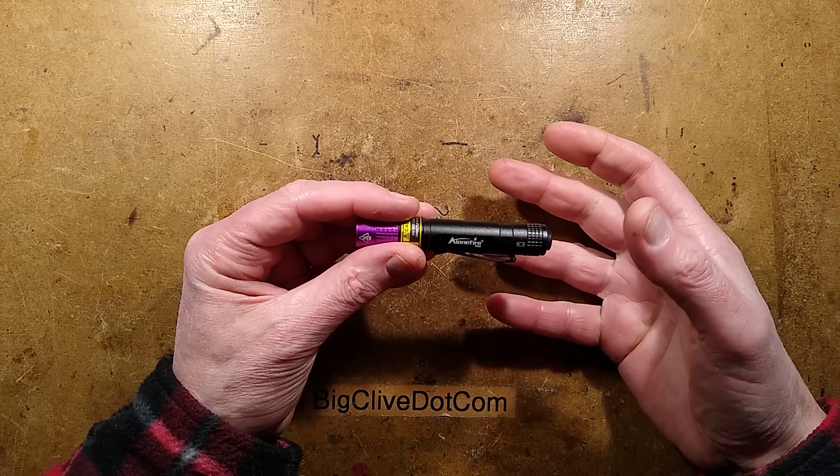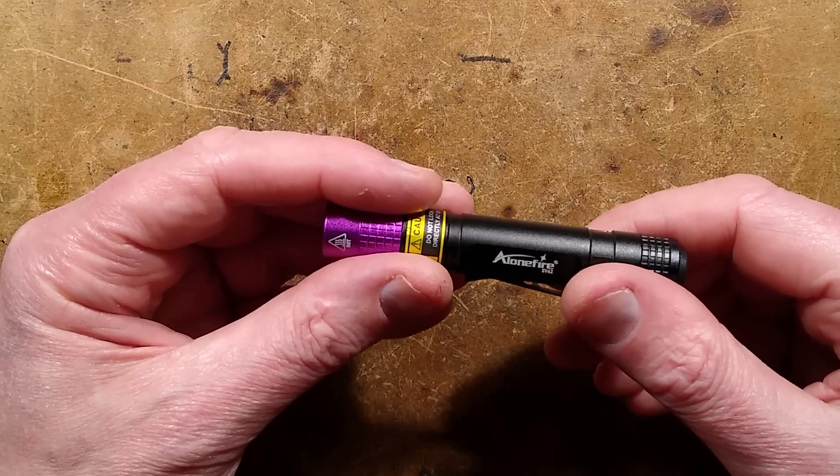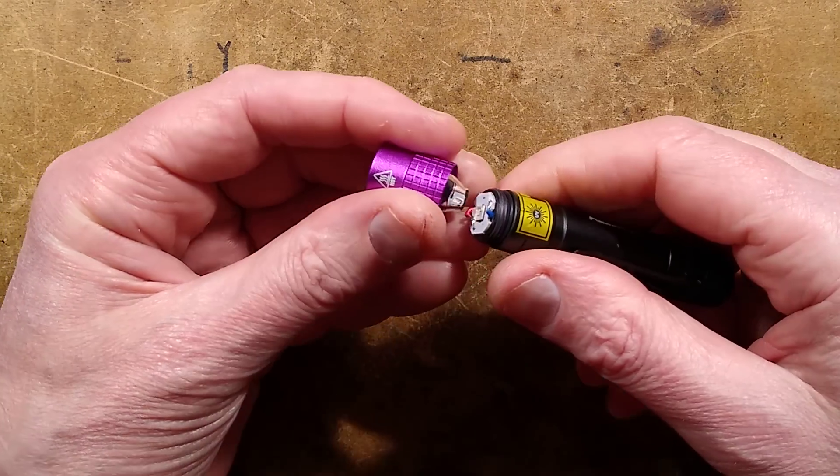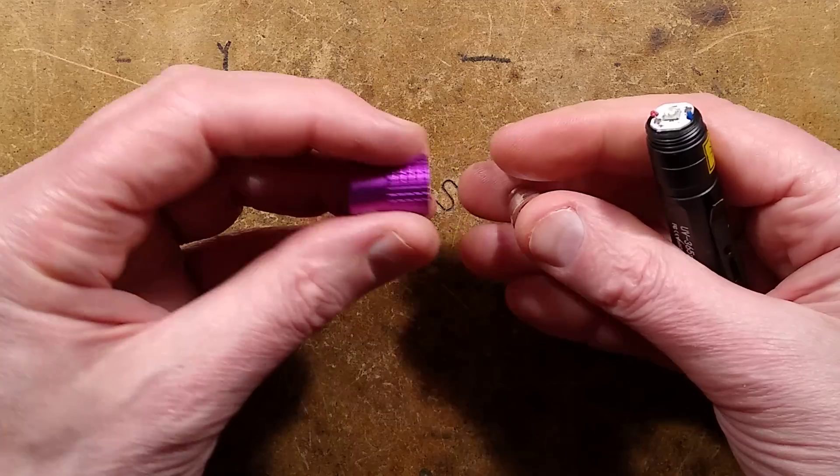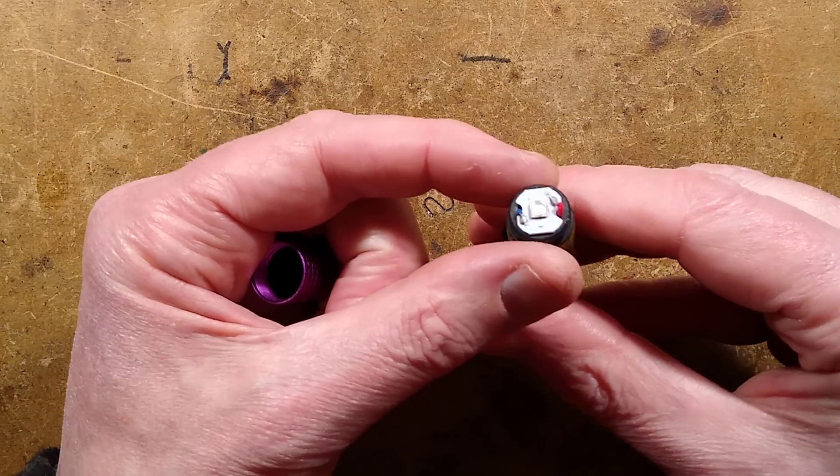Okay, so this is the bit where I break my new toy. Let's zoom down so you can marvel at me breaking my new toy and being all sad. If we unscrew the end of this, it reveals a little reflector and the LED mounted onto the aluminium substrate.